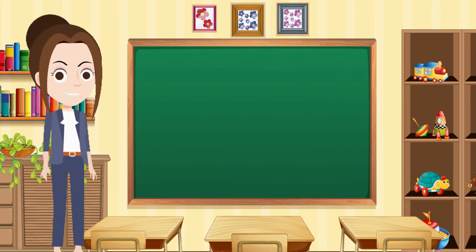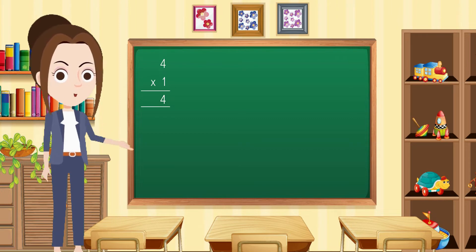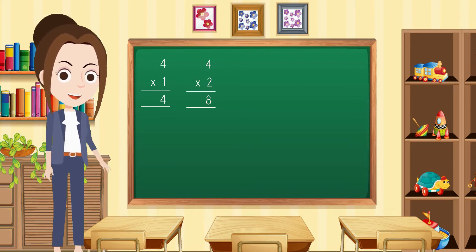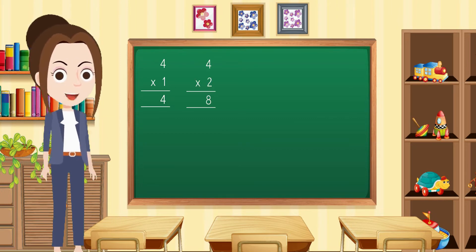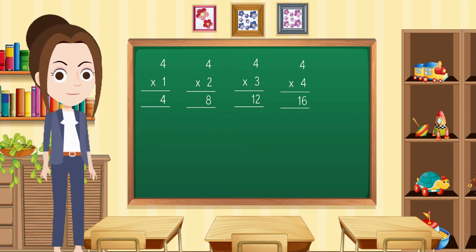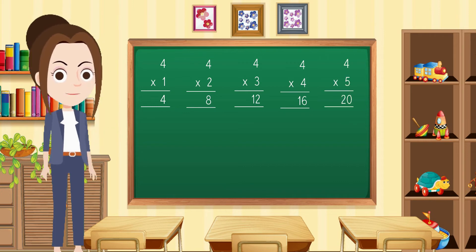Let's learn the multiples of 4. 4 times 1 is 4. 4 times 2 is 8. 4 times 3 is 12. 4 times 4 is 16. 4 times 5 is 20.